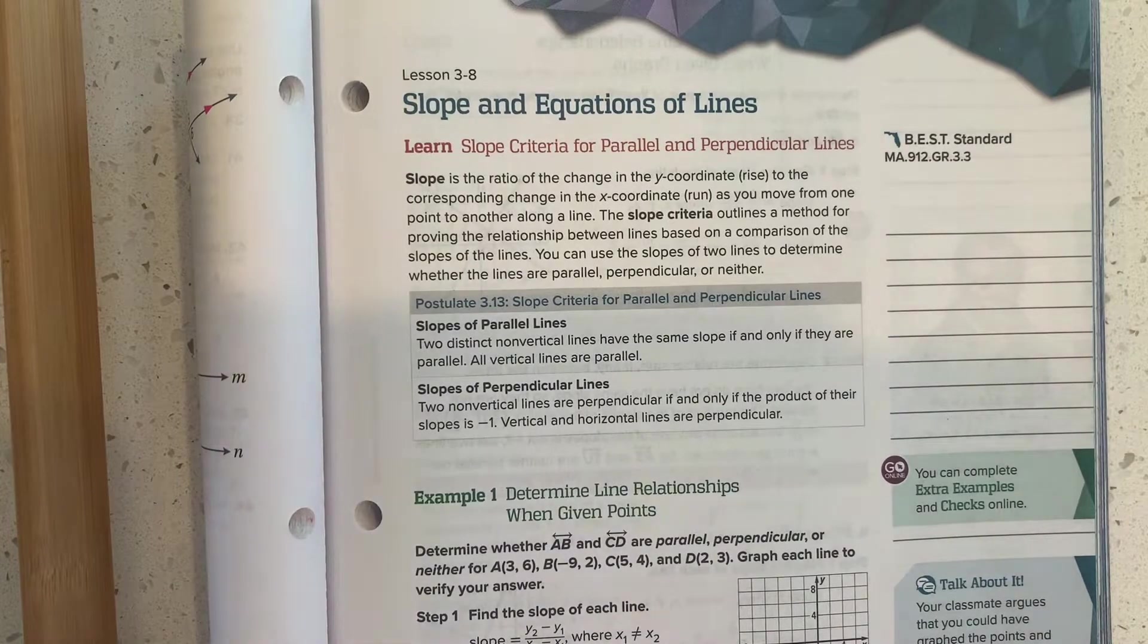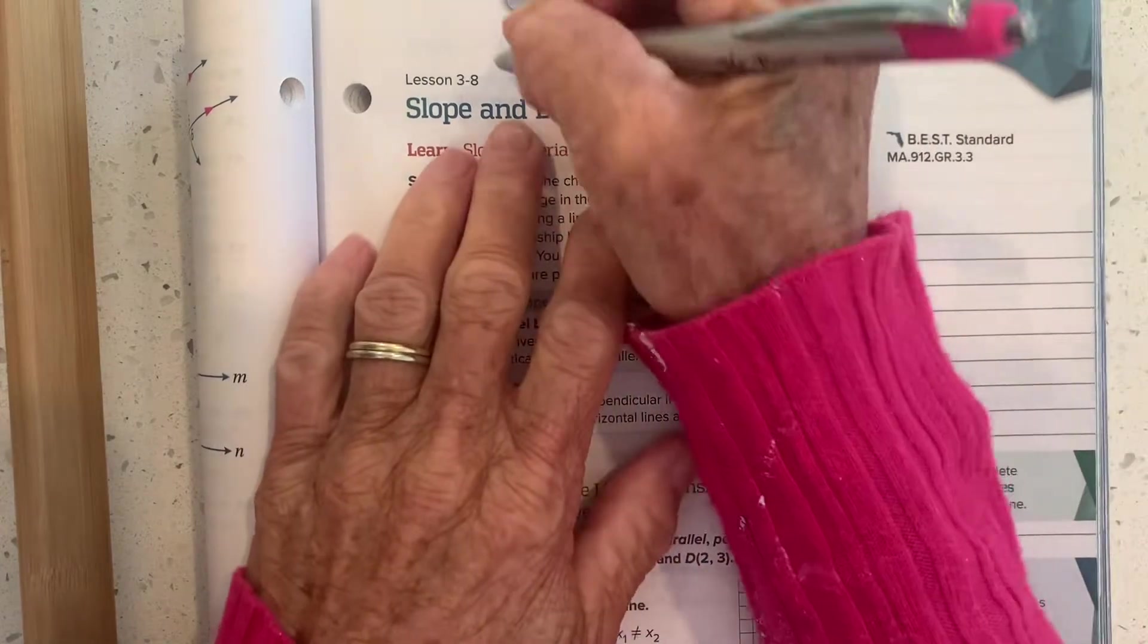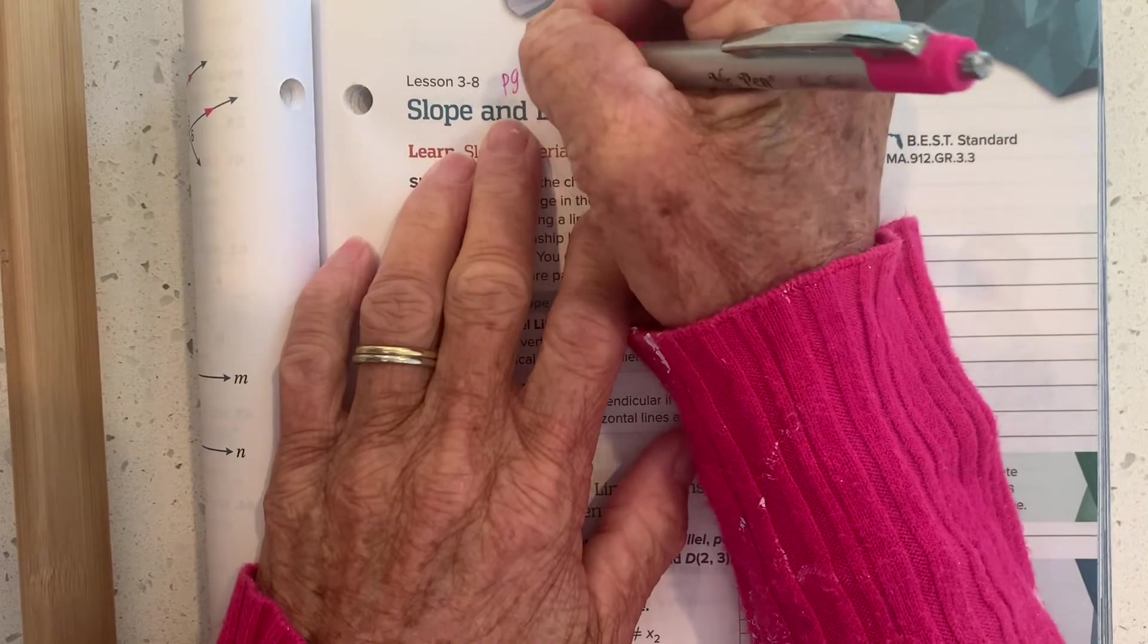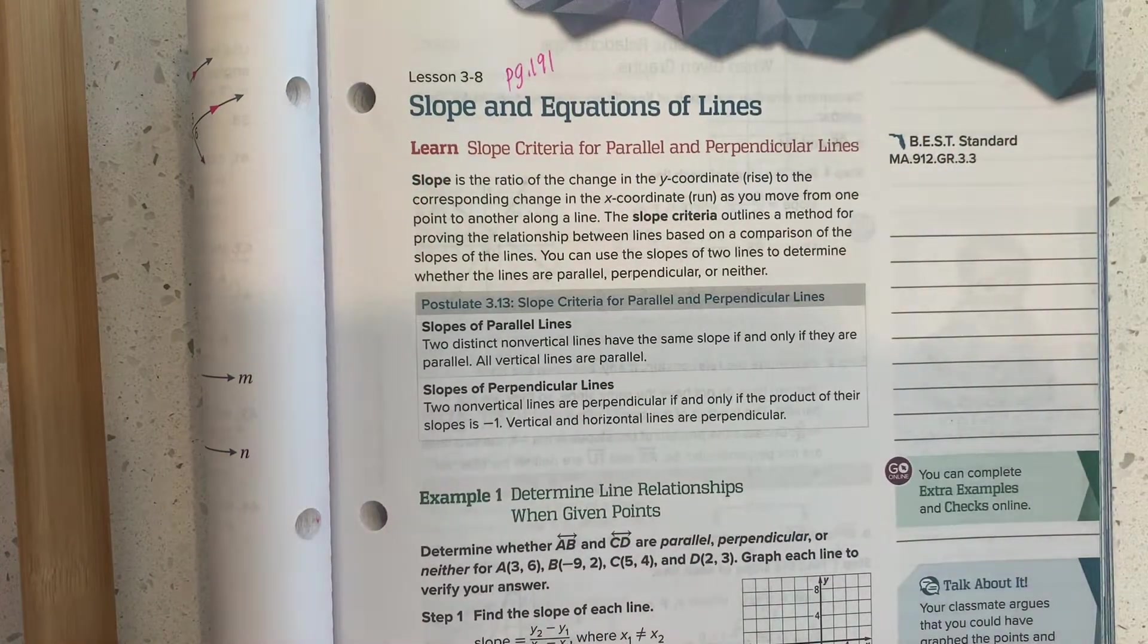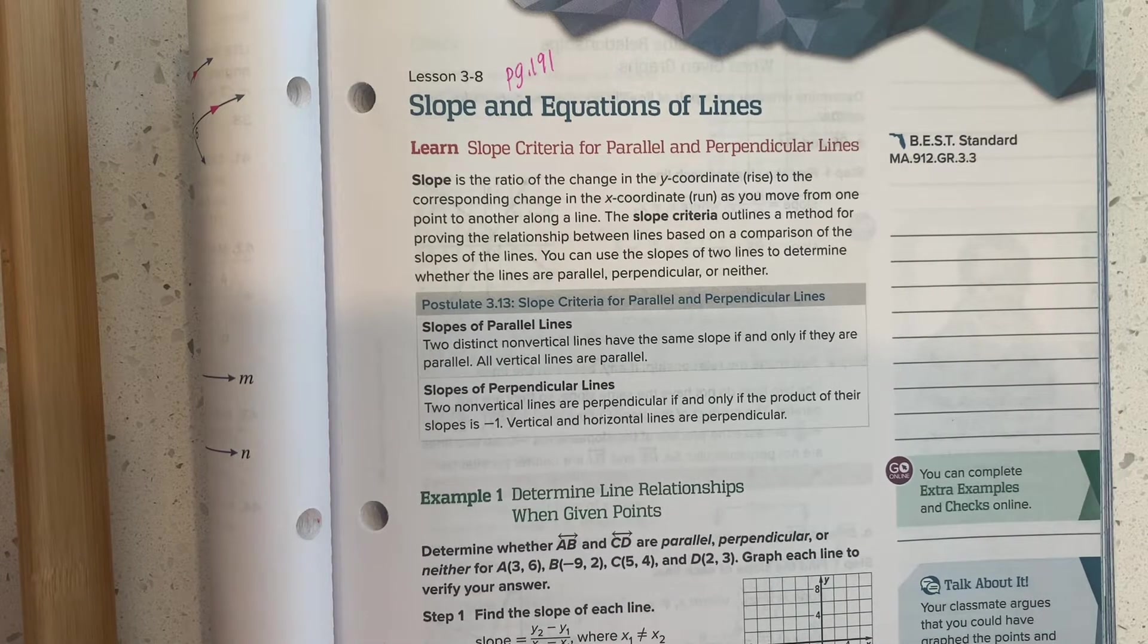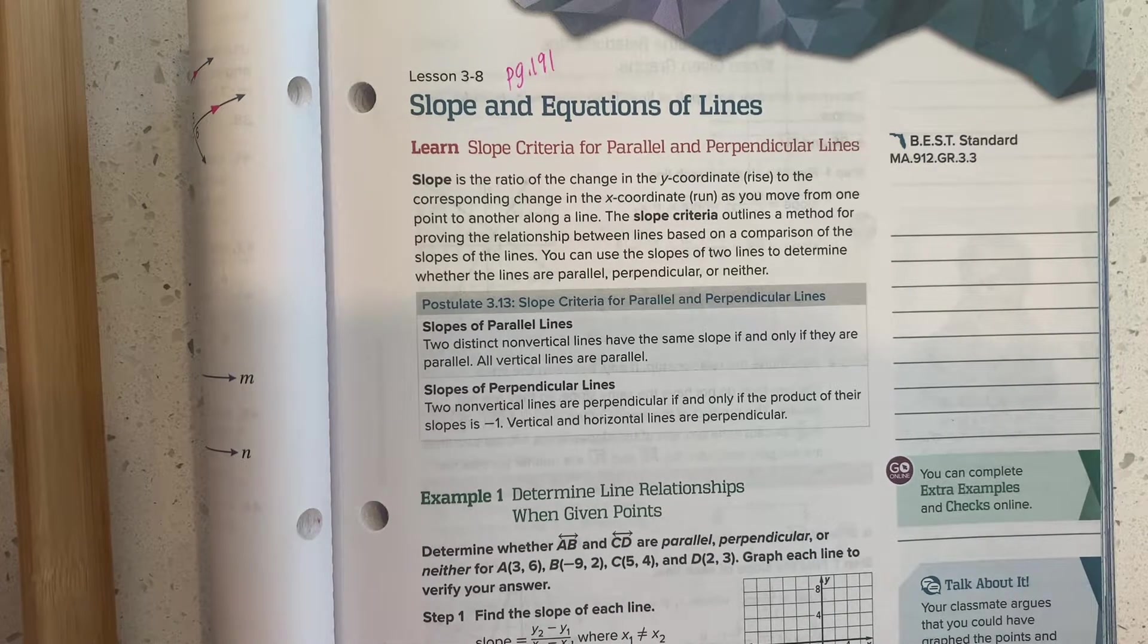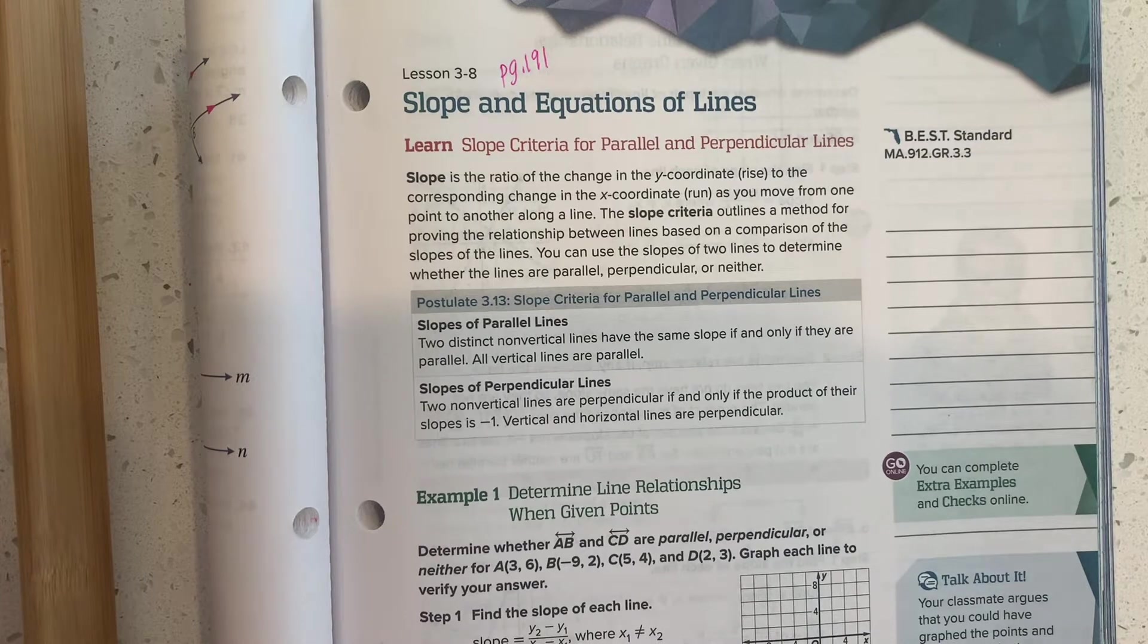I'm going to split lesson 3.8 into two lessons. So I'm starting on page 191, and we'll talk about what we know about the slopes of lines that are parallel and perpendicular to each other, but we'll stop when we reach the point where we want to start writing the equations of those lines.